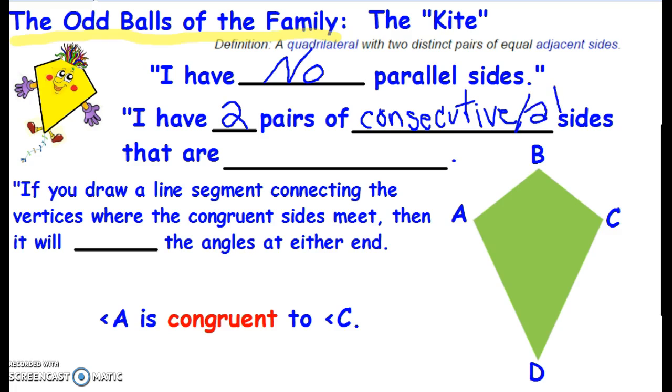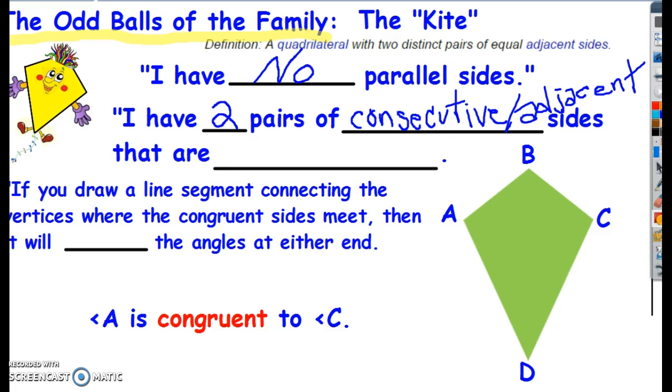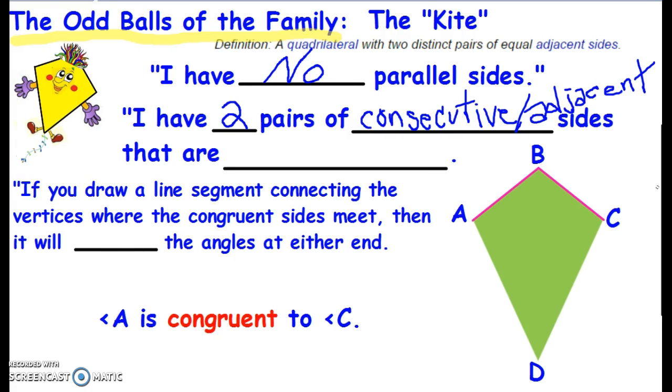Well, if you look at the definition, it means adjacent. And what did we say about adjacent? That means they're attached to one another. So let's look at our kite here and look at AB and BC. They are consecutive or adjacent sides. And those sides are equal.